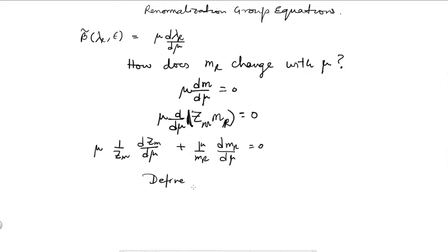I will define gamma_m as minus mu over mr times d_mr over d_mu. This gamma_m is dimensionless because mr has mass dimension 1 and mu has mass dimension 1. So this ratio is dimensionless, and that is why I have divided by mr, unlike the case in the beta function, so as to make gamma_m dimensionless.